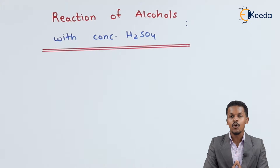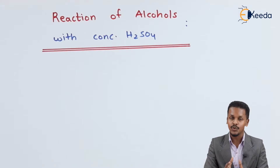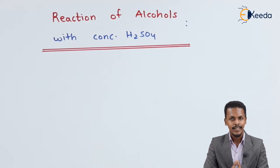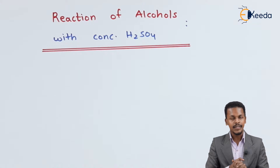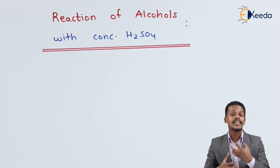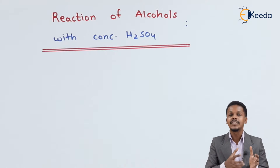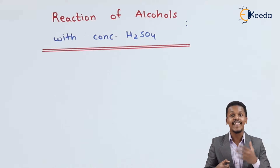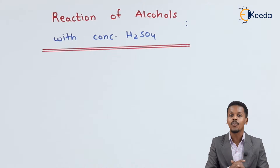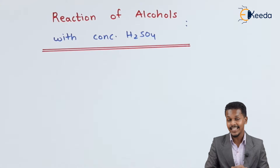In this topic let me talk about the reaction of alcohol with concentrated H2SO4, that is sulfuric acid. Sulfuric acid is basically known as a dehydrating agent. So whenever it is reacted with alcohol, it will remove the water molecule, thereby leading to the formation of an alkene.